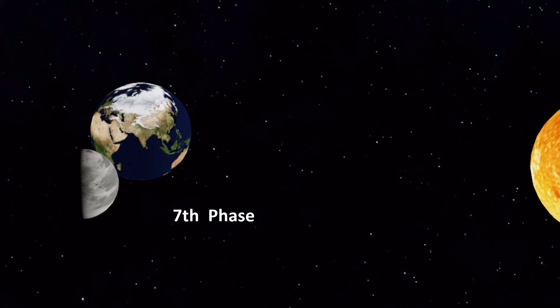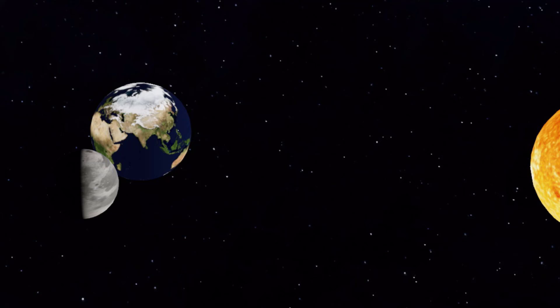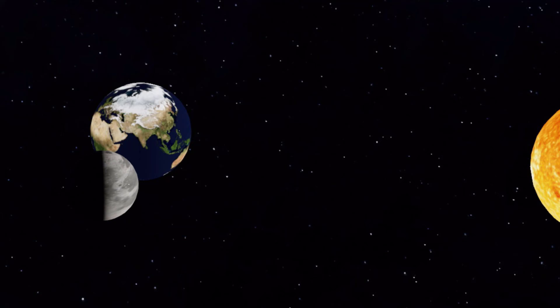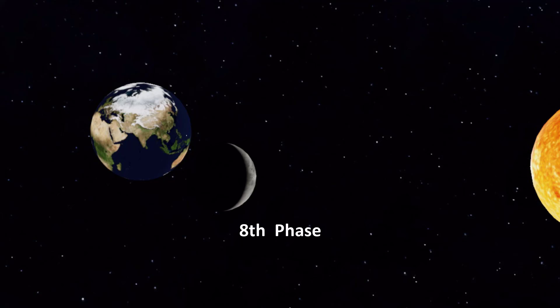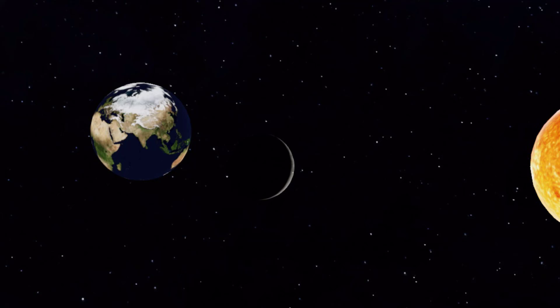The seventh phase of the moon is the third quarter. It is called the third quarter because it is three quarters of the way through the lunar cycle. The final phase of the moon is the waning crescent. This occurs when a small portion of the moon's illuminated side is visible to us, and the visible part of the moon will continue to decrease in size until it reaches the new moon phase.